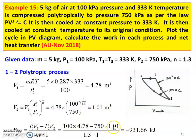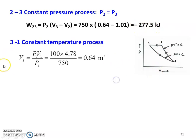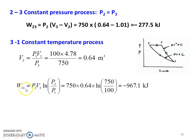Next, process 2→3 constant pressure: W23 = P2(V3 − V2). V3 = P1V1/P3 = 100 × 4.78 / 750 = 0.64 m³. So W23 = 750 × (0.64 − 1.01) = −277.5 kJ. Then process 3→1 constant temperature: W31 = P3V3 × ln(P3/P1) = 750 × 0.64 × ln(750/100) = −967.1 kJ.